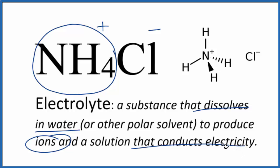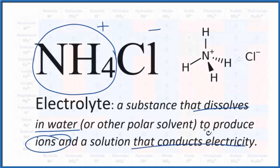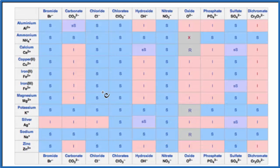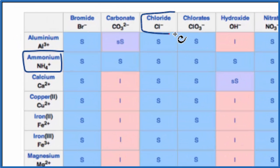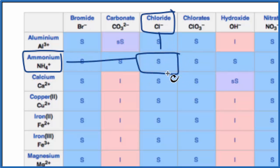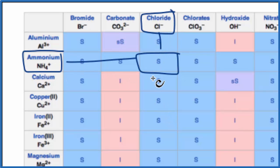Let's take a look at a solubility table to figure that out. On the solubility table, we find the ammonium ion — NH4+ — right up top, and then we look for the chloride ion, Cl−. We go over and down, and that 'S' tells us we have a soluble compound. It'll dissolve in water, it'll dissociate, and it'll be a strong electrolyte.